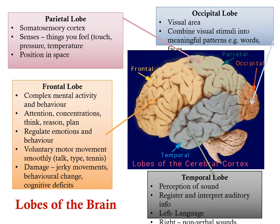The brain is divided into four lobes: parietal lobe, occipital lobe, frontal lobe, and temporal lobe. The parietal lobe, also known as the somatosensory cortex, processes things you feel — for example touch, pressure, and temperature — and also determines position in space. The occipital lobe deals with the visual area and combines visual stimuli into meaningful patterns.